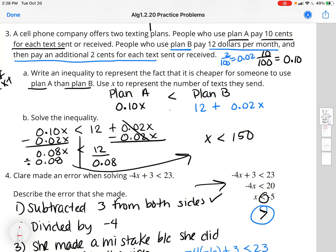But I got x is less than 150. So as long as they send less than 150 texts, then plan A will be cheaper. If they send 151 or 152, anything more than 150, then plan A is going to be more expensive. Some of you guys might as well go with plan B because you probably send more than 150 texts in a month.